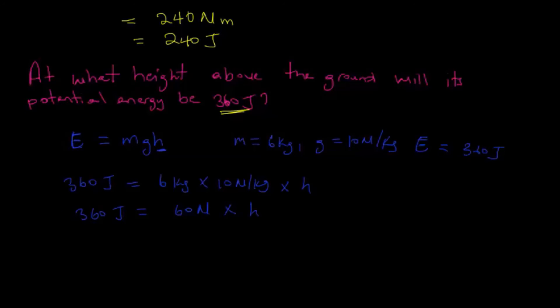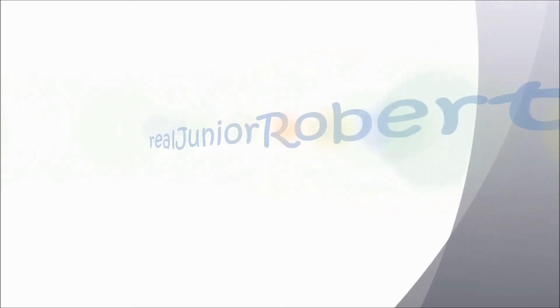Now to find h, we simply divide both sides by 60 newtons. So that works out to be h is equal to 360 divided by 60, which is simply 6 meters.